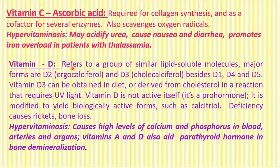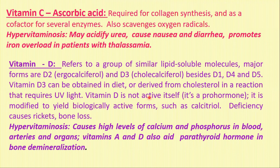Vitamin D is a group of similar fat-soluble or lipid-soluble molecules. The major forms are D2 (ergocalciferol) and D3 (cholecalciferol), besides D1, D4, and D5. Vitamin D3 can be obtained in the diet or derived from cholesterol in a reaction that requires UV light or sunlight. Vitamin D is not itself active because it's a prohormone; it is modified to biologically active forms such as calcitriol. Its deficiency causes rickets and bone loss. Its hypervitaminosis causes high levels of calcium and phosphorus in blood, arteries and organs.